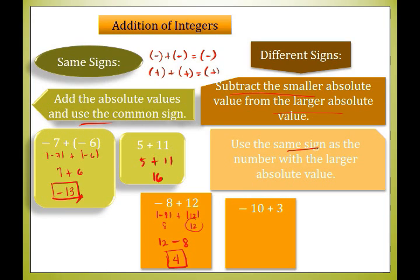Let's have another example: negative 10 plus positive 3. The absolute value of negative 10 is 10, and the absolute value of 3 is 3. We subtract: 10 minus 3 equals 7. Since 10 has the larger absolute value and 10 is negative, the sum of negative 10 and 3 is negative 7.